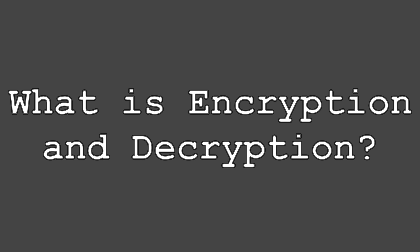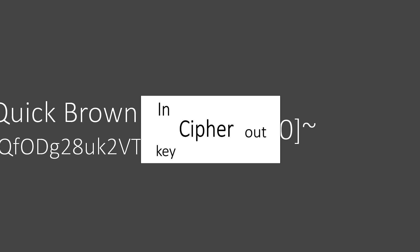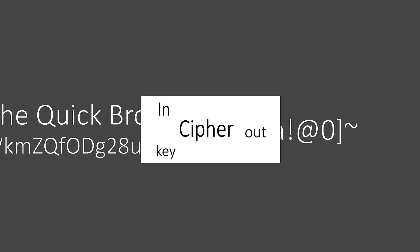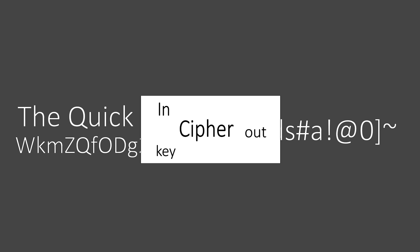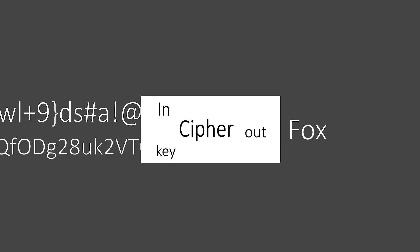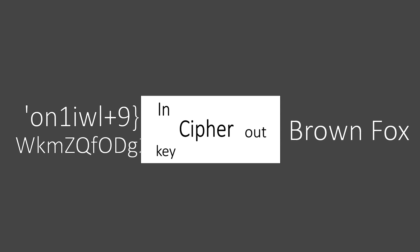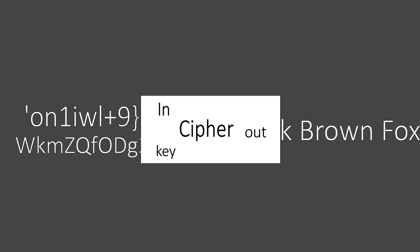First of all, what is encryption and decryption? Encryption is the process by which data is converted to an unreadable form. This is to keep data secret from anyone who should not have access. Decryption is basically the opposite of encryption, so we take the encrypted data and restore it to our original data.